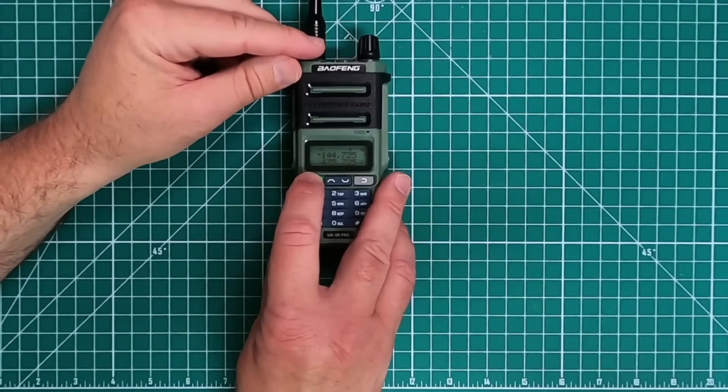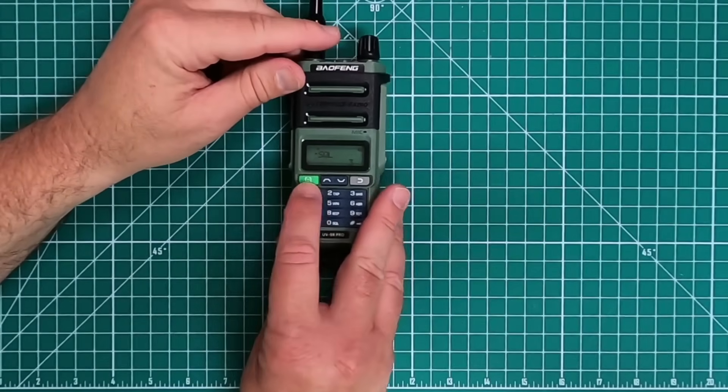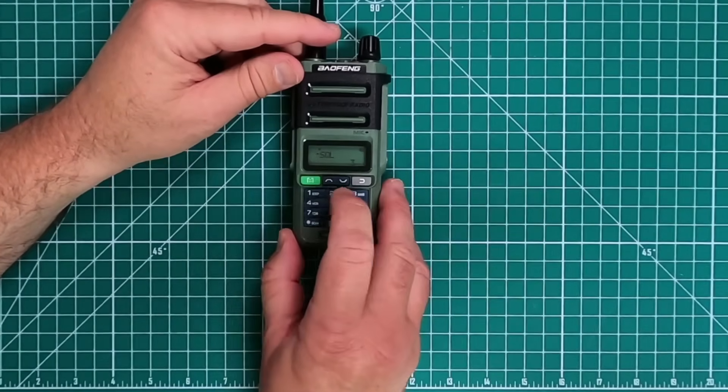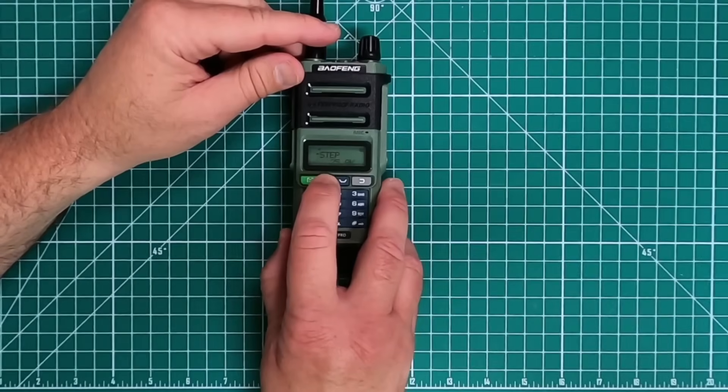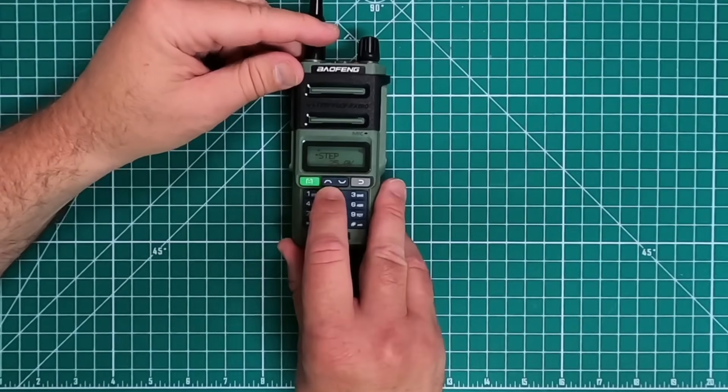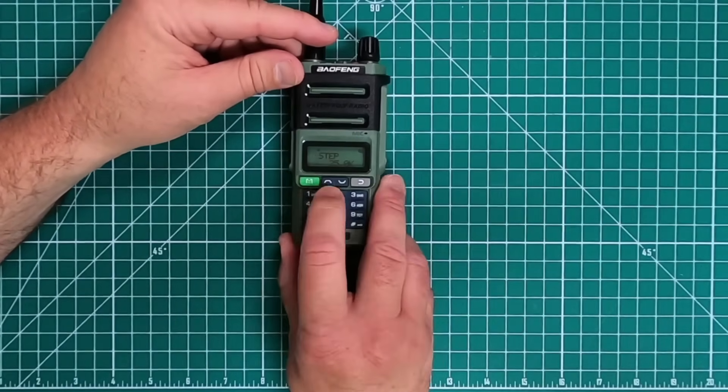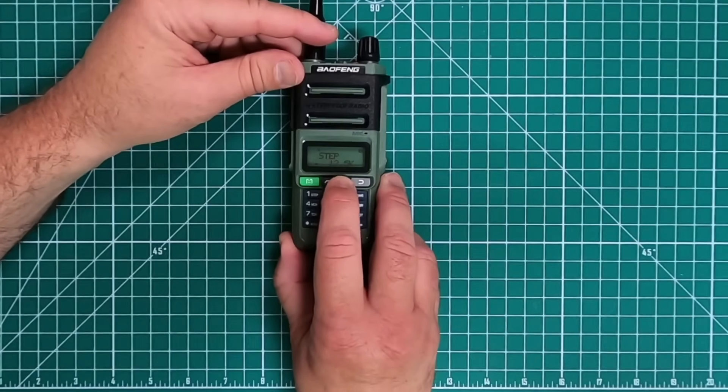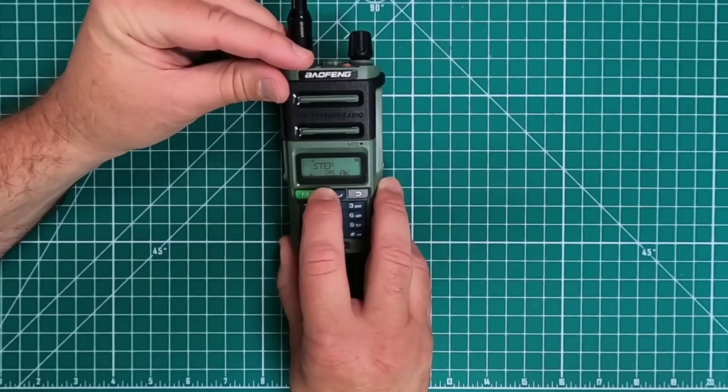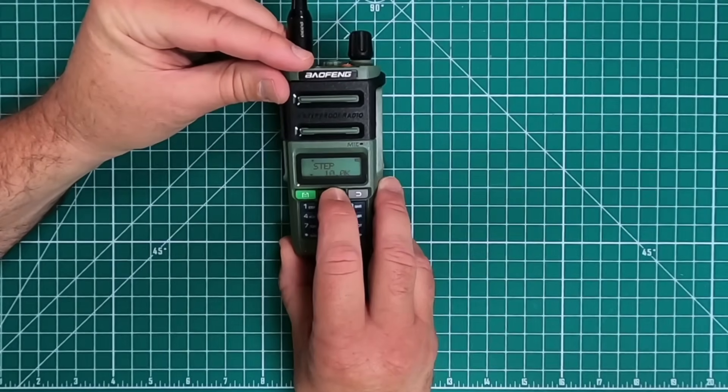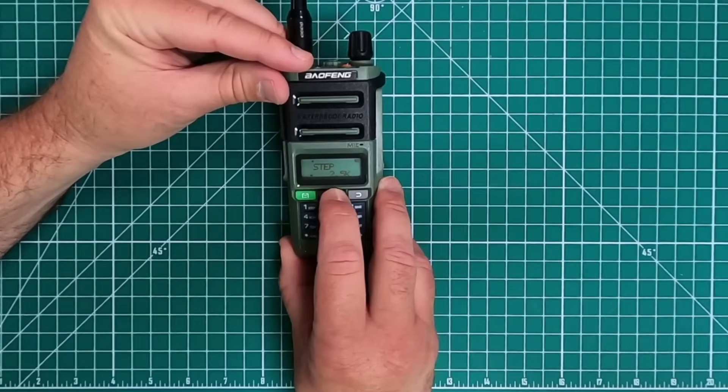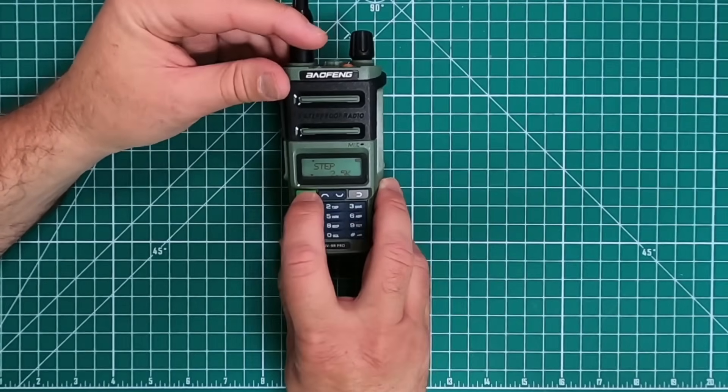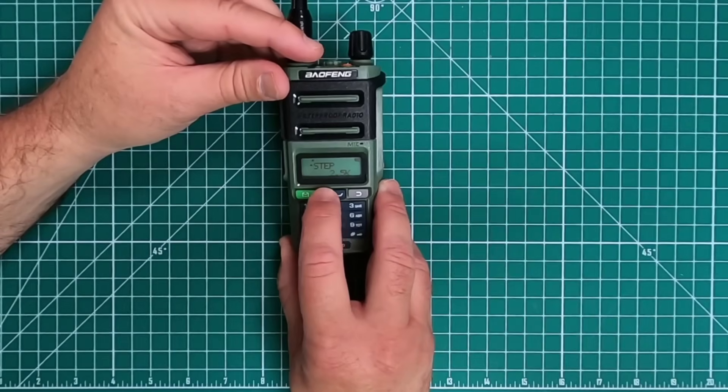As I said earlier, there's 41 menu items. Let's go ahead and push the left side. And just start scrolling up to whatever you need. I'd like to set mine at 2.5 and push it again to set it.